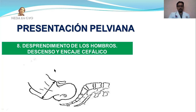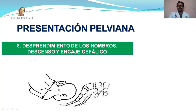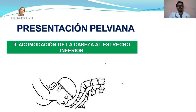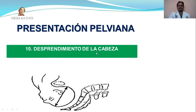El octavo tiempo es el desprendimiento de los hombros con simultáneo descenso y encaje cefálico, considerándose la cabeza encajada cuando el diámetro suboccípito-frontal coincide con el segundo plano de Hodge. El noveno tiempo es la acomodación de la cabeza al estrecho inferior, realizando una rotación para colocar el occipucio en el pubis y la frente en la excavación. El décimo tiempo es el desprendimiento de la cabeza.